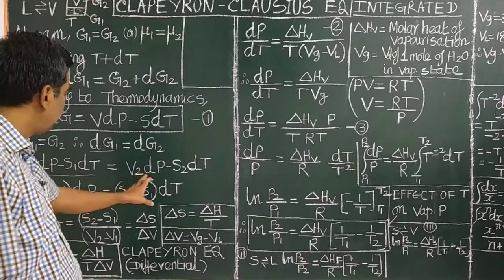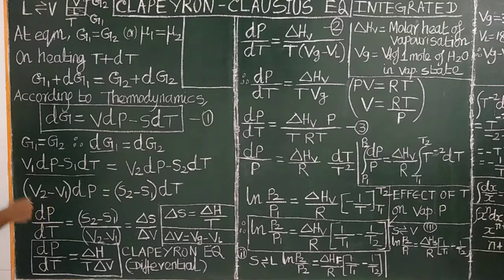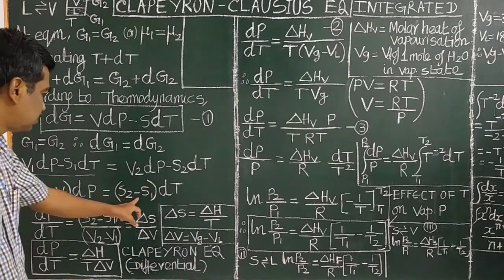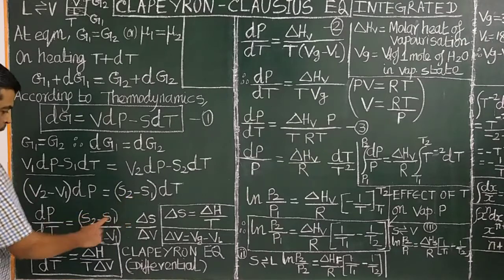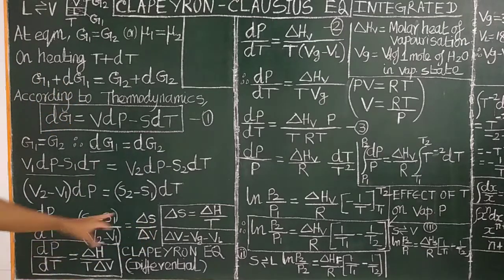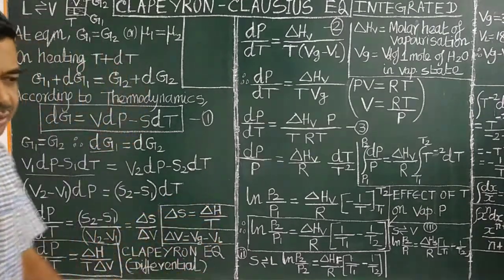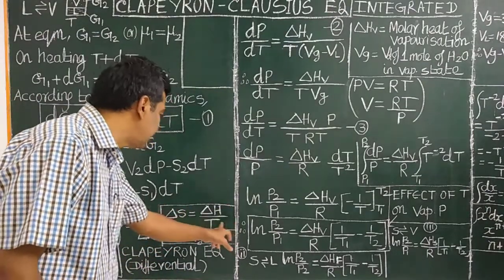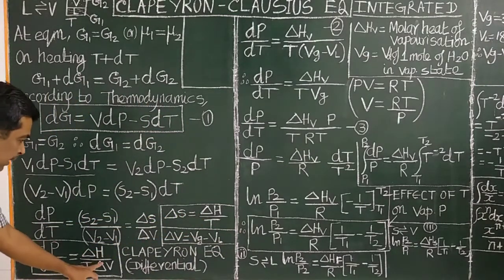We have: dG1 = V1·dP − S1·dT, and dG2 = V2·dP − S2·dT. Rearranging, (V2 − V1)dP = (S2 − S1)dT, so dP/dT = (S2 − S1)/(V2 − V1) = ΔS/ΔV. According to the second law of thermodynamics, ΔS = q/T, so substituting: dP/dT = ΔH / (T·ΔV).